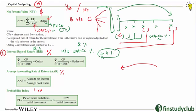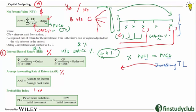Internal rate of return is a mathematical construct — it is that hypothetical rate at which the present value of cash inflows equals the present value of cash outflows. Keep in mind these inflows and outflows refer to the investing timeline, i.e., the project. You hypothetically try to equate them, and that rate is your IRR.